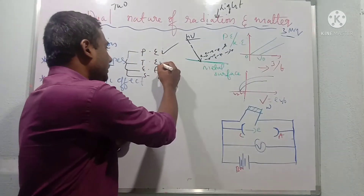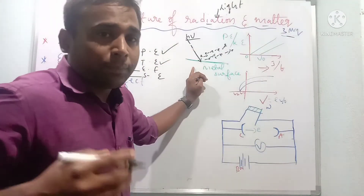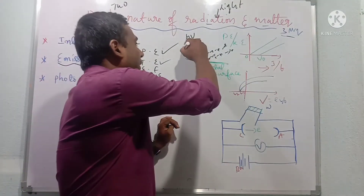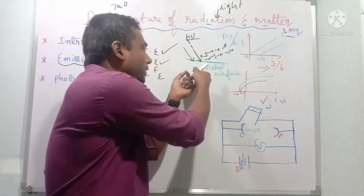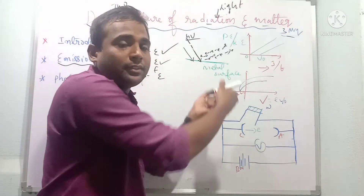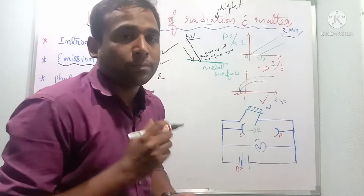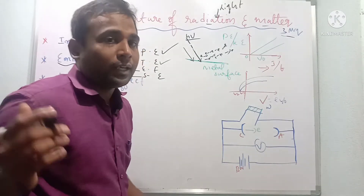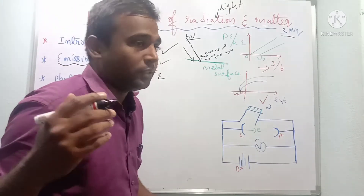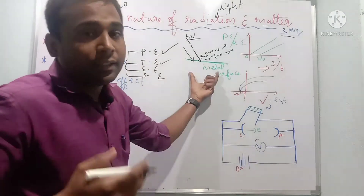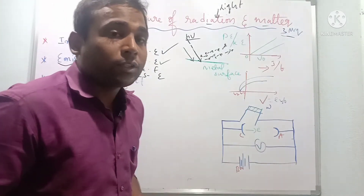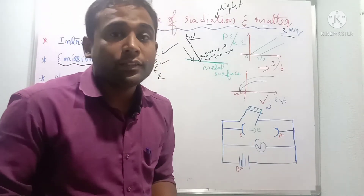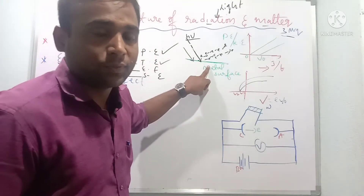The second type is thermionic emission. By applying heat energy to the metal surface, emission of electrons takes place — this is called thermionic emission or thermal emission of electrons. It also depends upon the nature of the material and the amount of heat energy supplied to the metal surface.